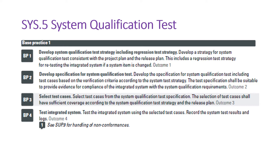BP2 talks about developing the specification for system qualification testing. A specification is a set of test cases. We develop a specification including test cases based on the verification criteria defined in the system requirement specification. For each and every system requirement — whether functional, non-functional, or interface requirement — all should be covered in the system qualification test specification, and we ensure coverage using bidirectional traceability.